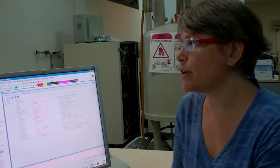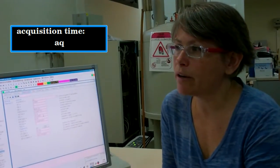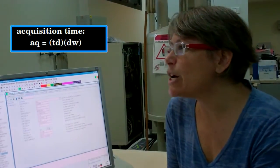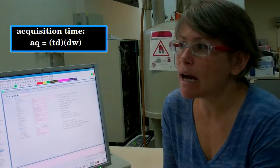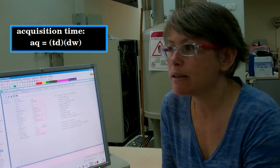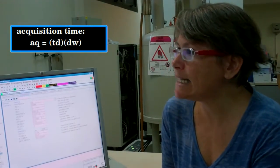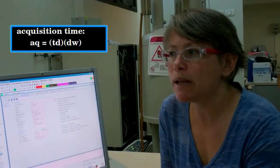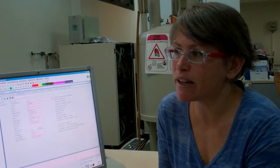The next parameter is the acquisition time. This is the time that the detector is on, or the time during which the FID is being recorded. How long is that? It's the number of times the signal intensity is recorded, multiplied by the time interval between each point. So AQ, our acquisition time, is equal to TD, the number of points used to digitize the FID, multiplied by the dwell time, which is determined by 1 over twice the specified spectral width.